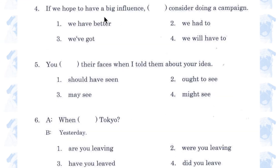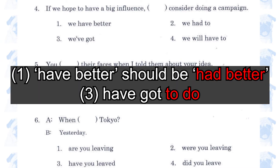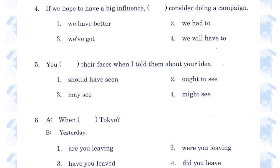Number 4. 'If we hope to have a big influence, we have better / we had to / we've got / we will have to consider doing a campaign.' The verb after the blank is in the bare form, so we can eliminate 1 and 3. Between 2 and 4, number 4 — 'we will have to' — is correct because we are not talking about the past, as shown by the present tense verb 'hope' in the subordinate clause.